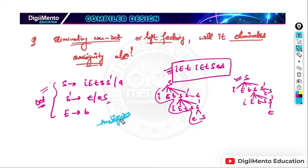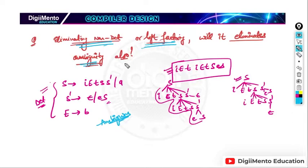So what does that mean? It means eliminating non-determinism or doing left factoring will not eliminate ambiguity. Ambiguity will remain even after converting a non-deterministic grammar to a deterministic grammar.